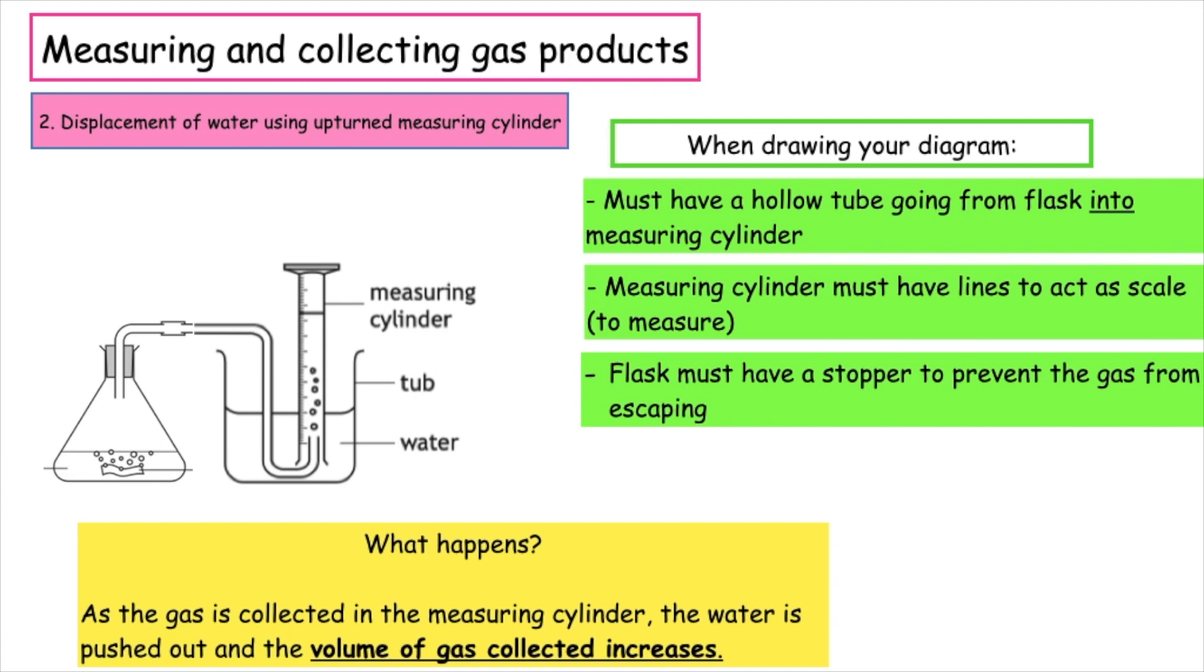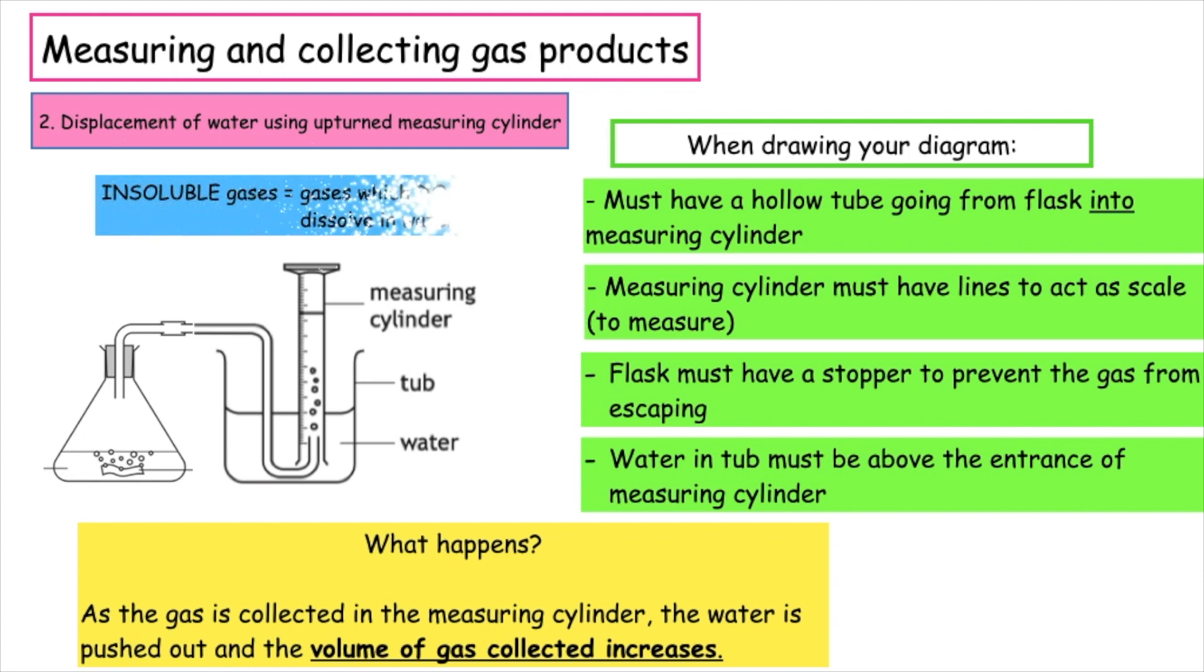The water in the tub must be above the entrance of the measuring cylinder. This ensures that your measuring cylinder is filled to zero initially, and as the gas is collected, this will push the water out. This method is used for collecting insoluble gases. The reason being, if the gas is soluble, it will dissolve in the water and would not be collected.